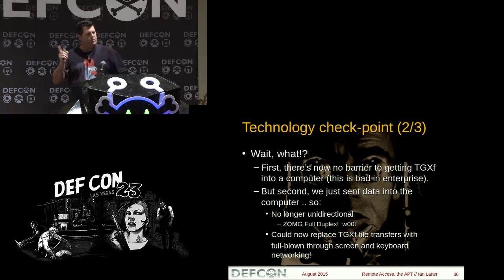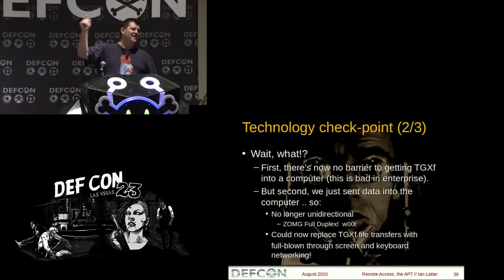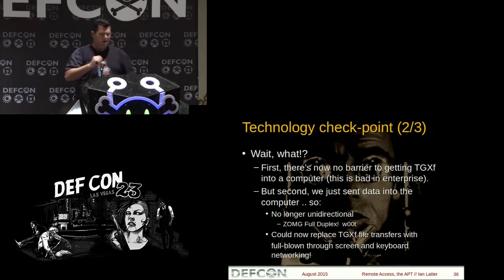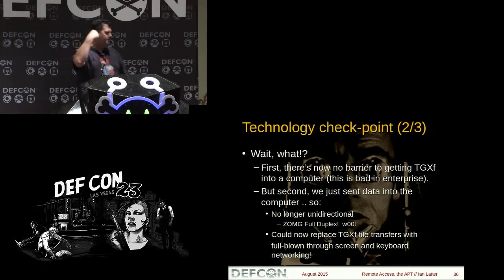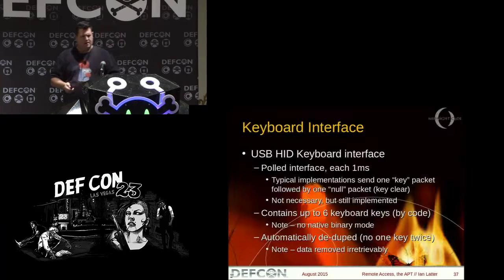Technology checkpoint two. So what have we done at this stage? Now there's no barrier to getting a client onto the system, and we've obviously got data off the system — which means at this point I've got a bidirectional data flow.